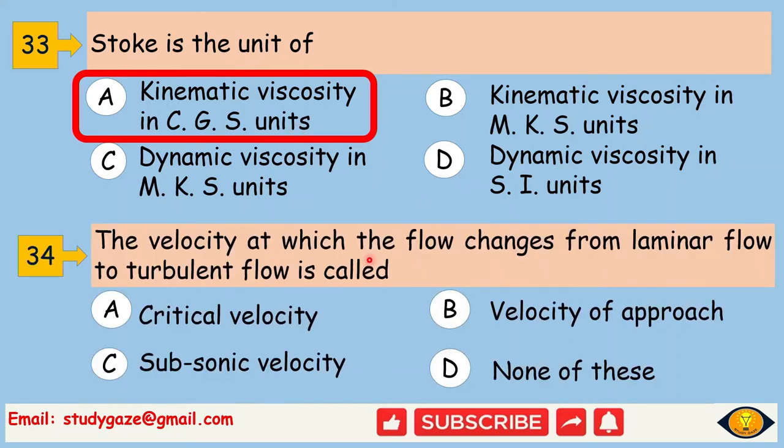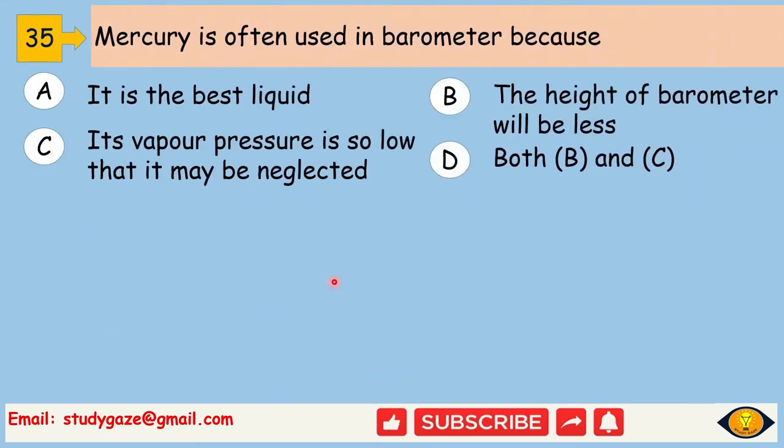The velocity at which the flow changes from laminar flow to turbulent flow is called critical velocity. Mercury is often used in barometer because the height of the barometer will be less and its vapor pressure is so low that it may be neglected.